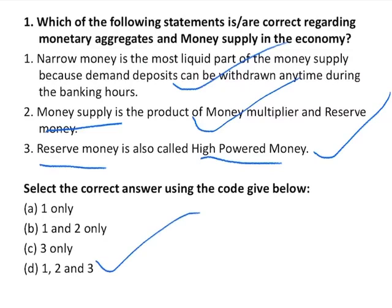Now some value addition. Narrow money, also known as M1, is currency with the public plus demand deposits of the public in the banks. It is the most liquid part of the money supply because demand deposits can be withdrawn anytime during banking hours. Reserve money is currency in circulation plus bankers' deposits with RBI plus other deposits with RBI plus cash reserves of the banks with themselves. Reserve money is all the cash in the economy and is also known as high powered money.